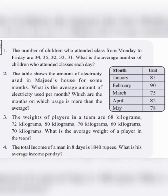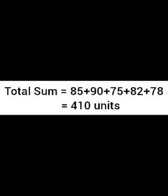We have to find out the average amount of electricity used per month using the same old formula. We have to find out the total sum — add up all the units: 85 plus 90 plus 75 plus 82 plus 78, and we get 410.